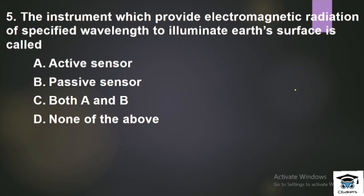Next question: The instrument which provides electromagnetic radiation of a specified wavelength to illuminate a surface is called what? This refers to an active sensor, which has its own energy source — unlike a passive sensor that uses natural energy from the Sun. Option A is correct.